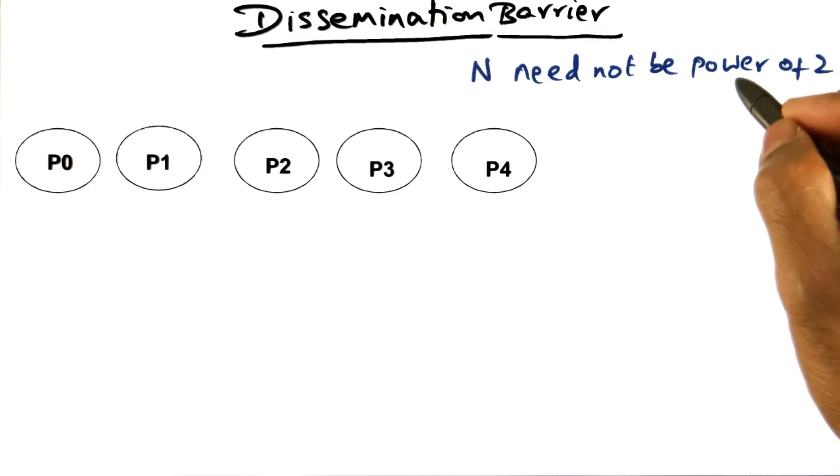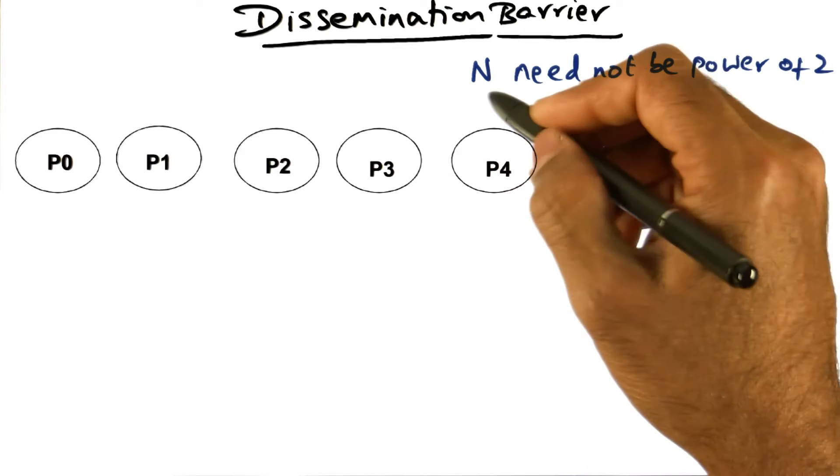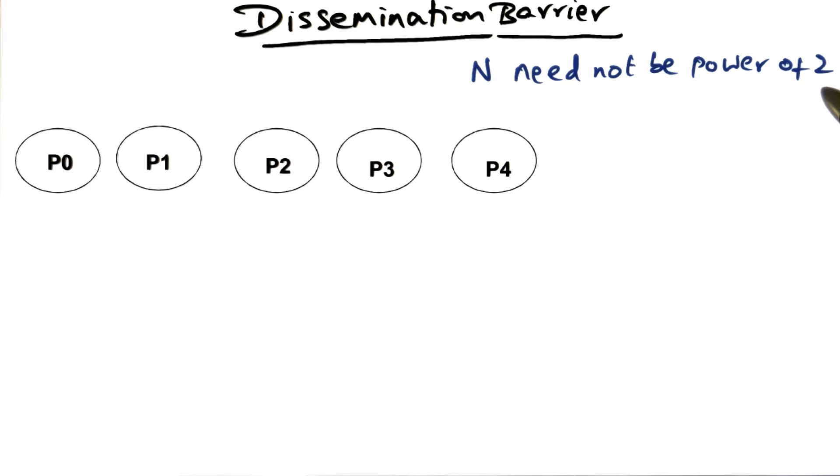Therefore, n need not be a power of two. You will see why this condition need not be satisfied as I start describing the algorithm to you.